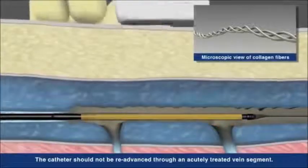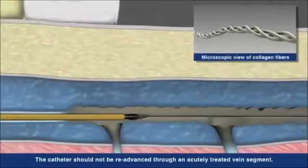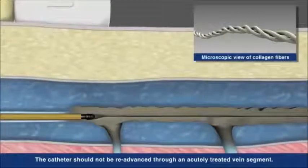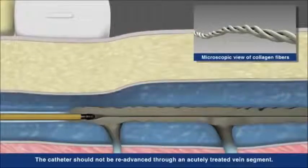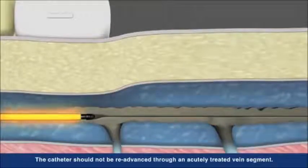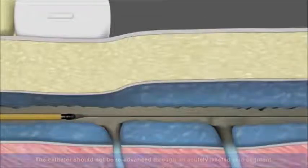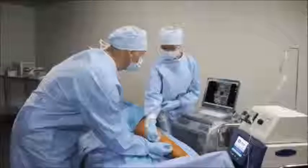The heat results in the collapse of the target vein, creating a fibrotic seal and occluding the vessel. Blood flow is naturally redirected to healthy veins as the recovery process begins. The speed and precision of the benefit procedure offers patients a rapid and mild recovery.